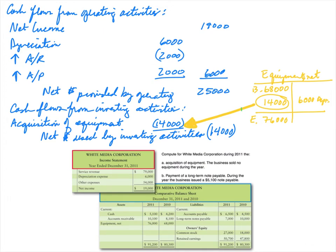Now let's move to the cash flows from the investing activity section — the second of three sections in order: operating, investing, and financing. In the investing section we analyze long-term assets. We have one long-term asset: equipment net. The word 'net' means depreciation is included — it's net of depreciation. This account started at $68,000 and ended at $76,000, as shown in the T-account.